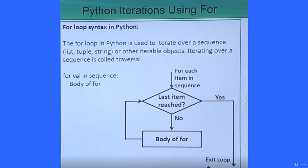Python iterations using for. The for loop syntax in Python - the for loop in Python is used to iterate over a sequence. A sequence may be a list, may be a tuple, may be a string or any other iterable objects. Iterating over a sequence is also known as a traversal.